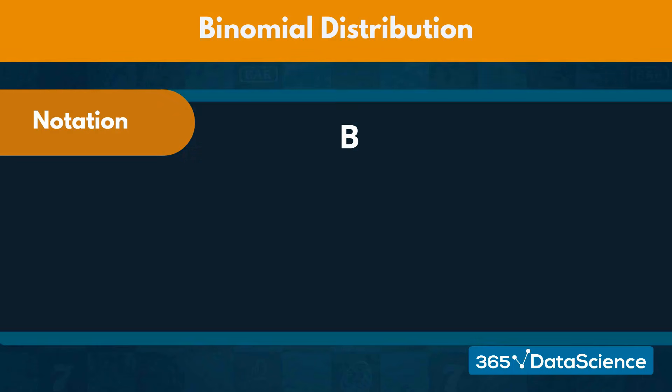We use the letter B to express a binomial distribution, followed by the number of trials and the probability of success in each one.